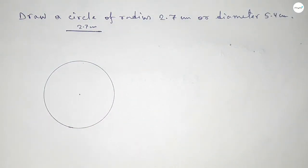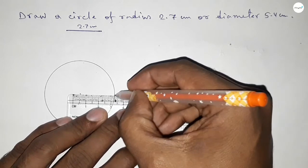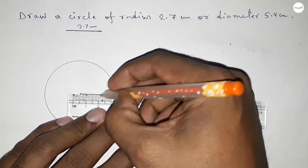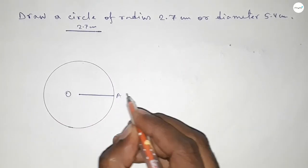So now joining this one and taking here the center O and here a point A. So this is 2.7 centimeter. Therefore, radius OA equals 2.7 centimeter.